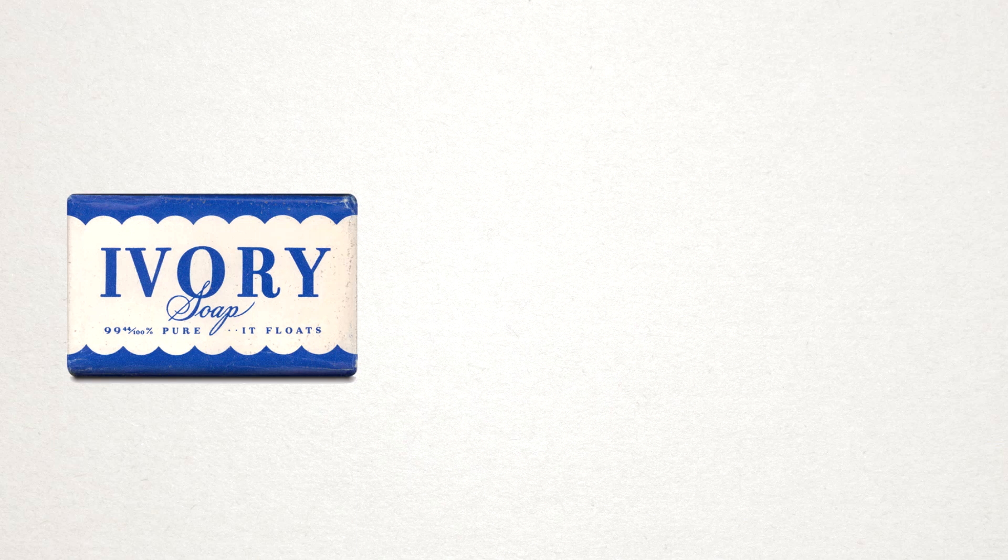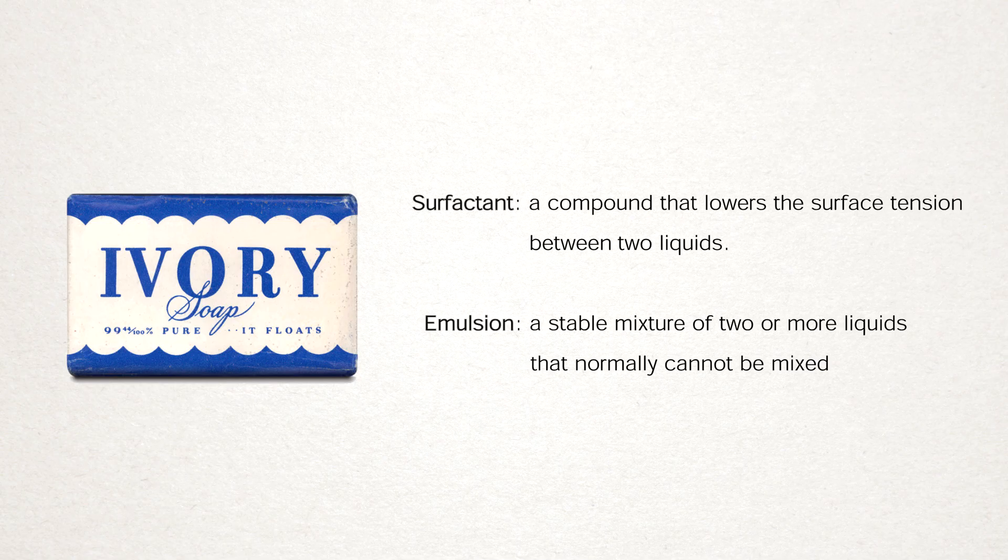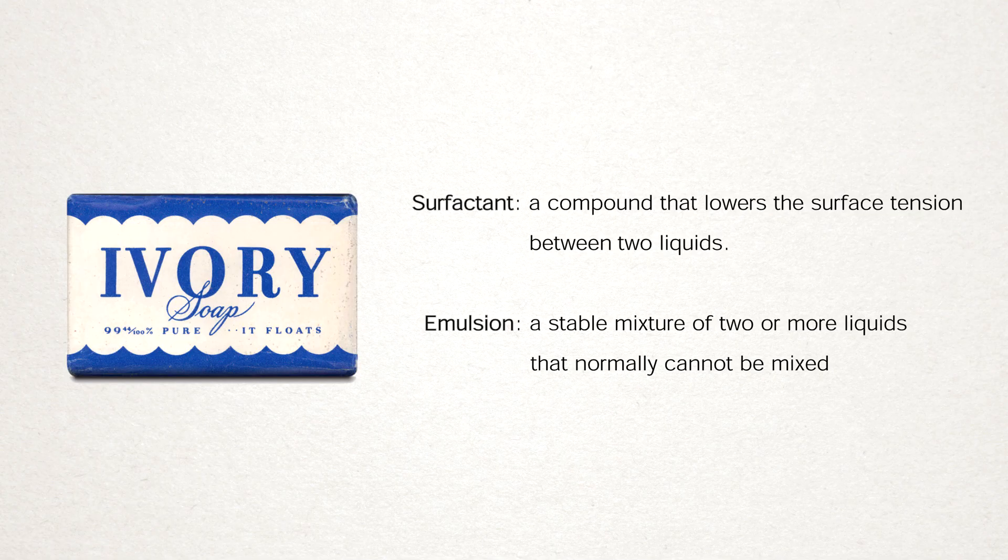Soap is used to wash many things like dishes or clothing, and in every case it's acting the same way. It works as something called a surfactant, which emulsifies oils and allows them to be carried by water.